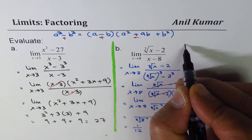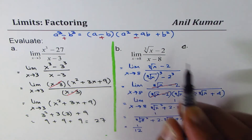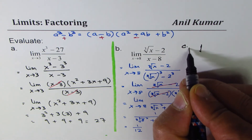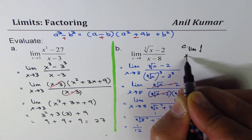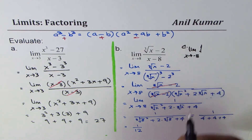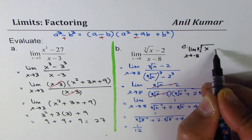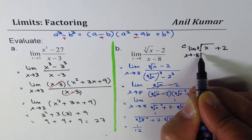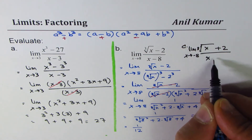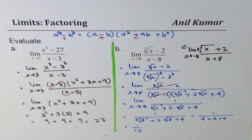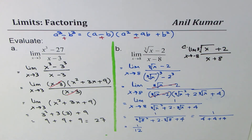Now let me give you a practice question. We'll change the question a bit: limit as x approaches minus 8 of (cube root of x plus 2) divided by (x plus 8). Use the formula a cube plus b cube to get your answer for this particular question. I'm Adil Kumar and I hope that helps. Thank you and all the best.